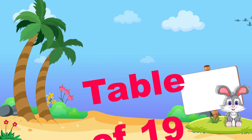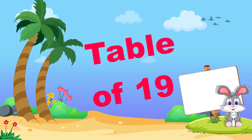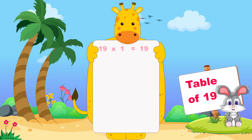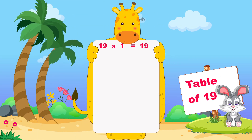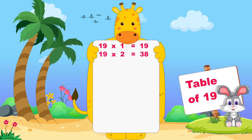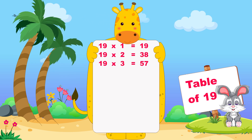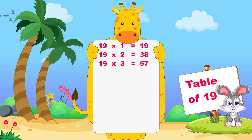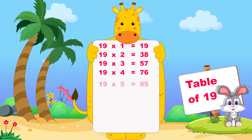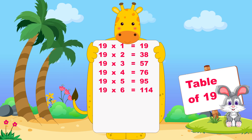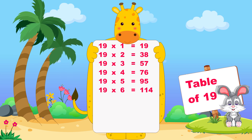Let's learn now table of nineteen. Nineteen ones are nineteen, nineteen twos are thirty-eight, nineteen threes are fifty-seven, nineteen fours are seventy-six, nineteen fives are ninety-five, nineteen sixes are one hundred fourteen.